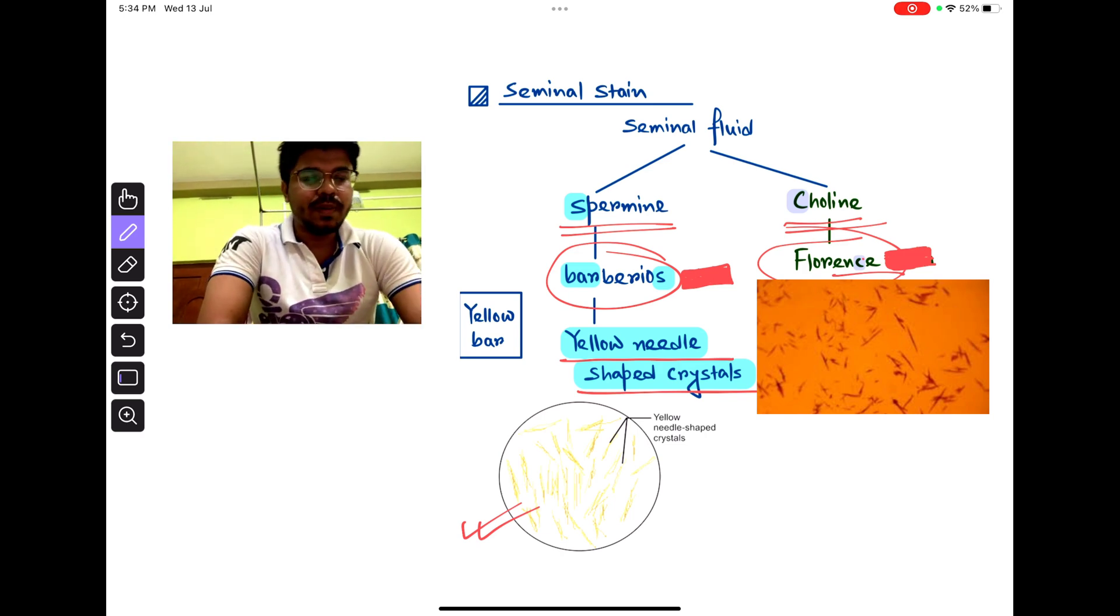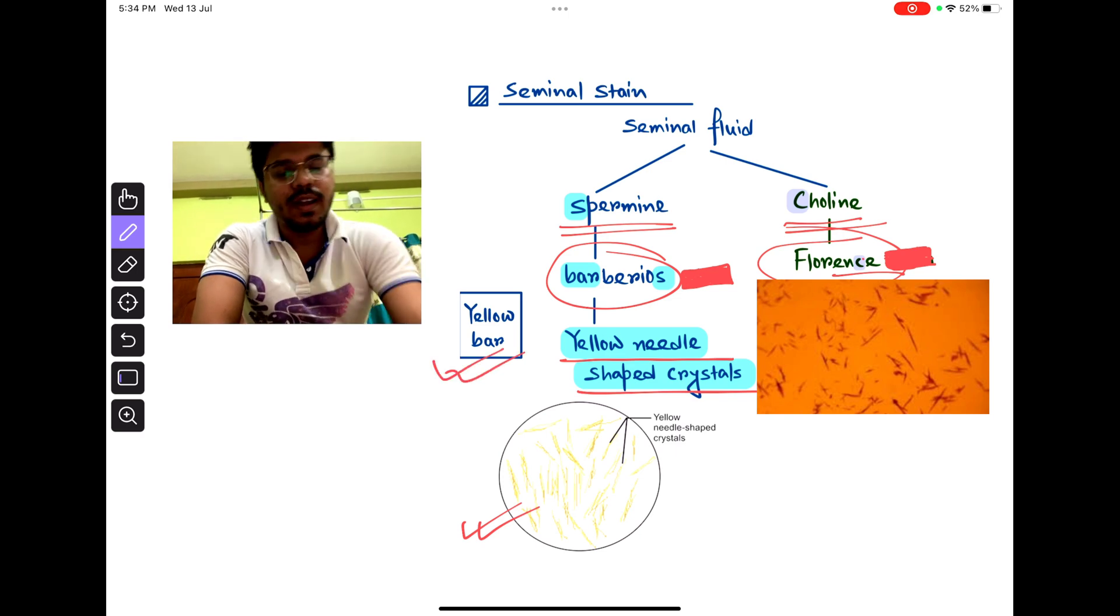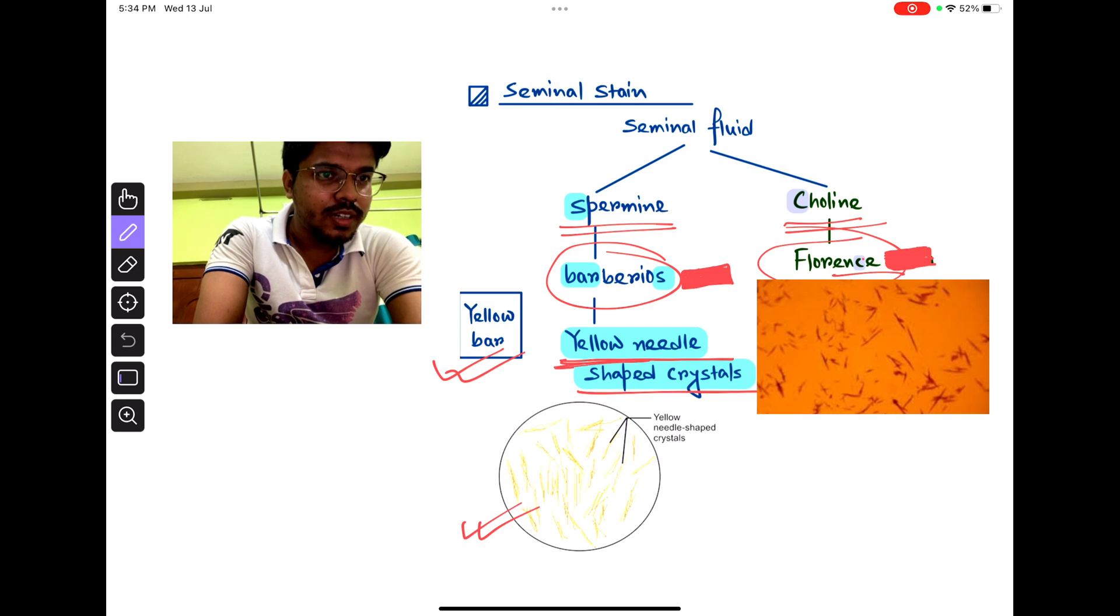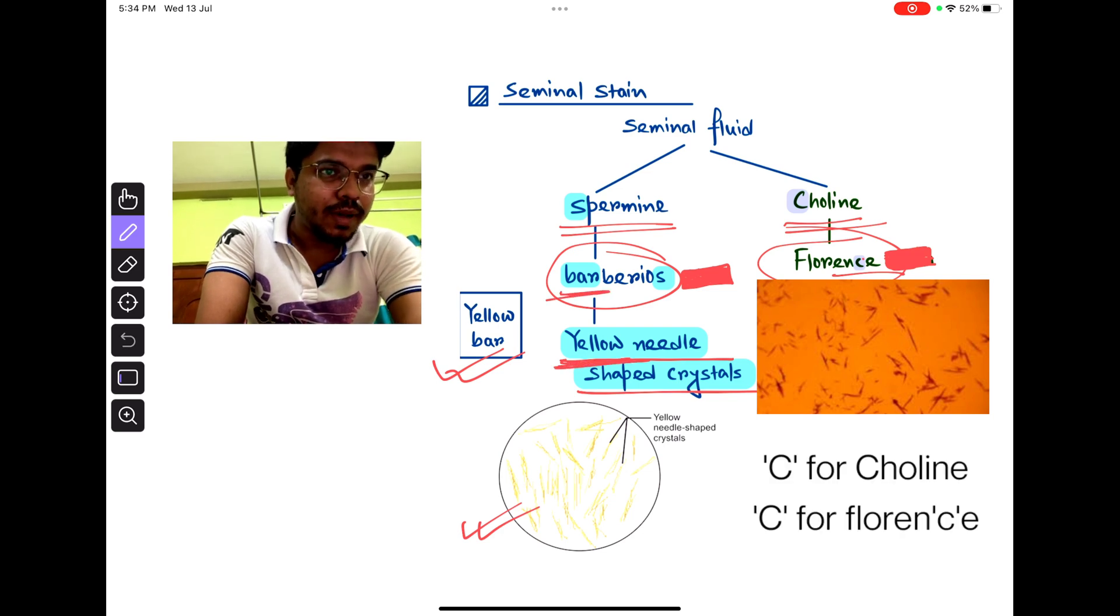Okay, how to remember? Remember yellow bar. Remember this word, yellow bar. So yellow needle shaped crystal, bar for Barbaryose.